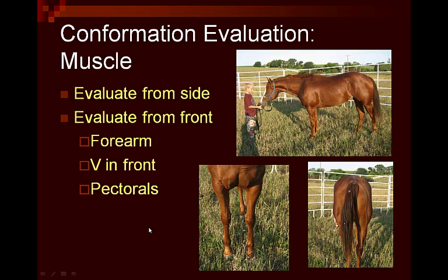Our next category to evaluate is muscle. With muscling, we can evaluate it from the side, and it's also better to evaluate it from front and rear. When looking from the side, we can look down through the shoulder and forearm, and also down through the hip and stifle. However, it's easier to see if we move in front and behind, looking to see if the horse is well-muscled up through the pectoral region with somewhat of an inverted V. In front, we look to see how much muscling comes down through the forearms and ties in through the shoulders, and the expression or delineation of the muscle pattern.